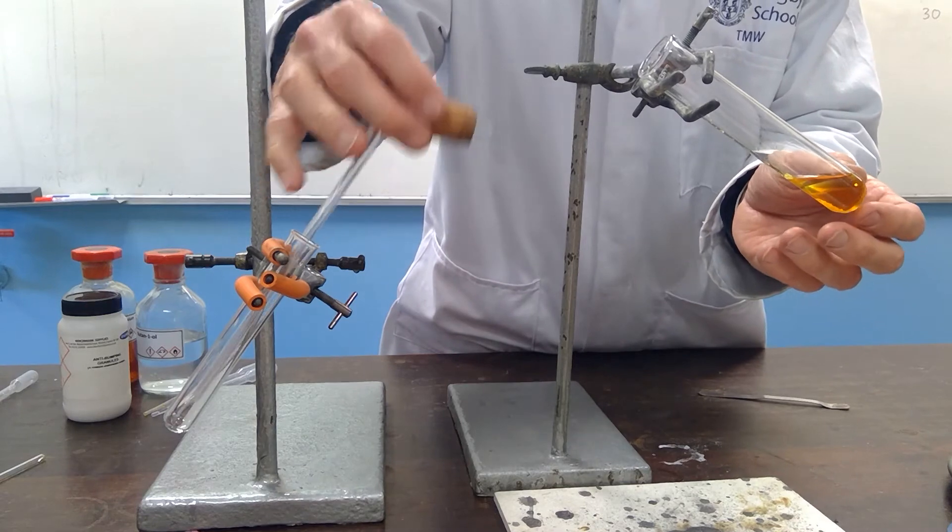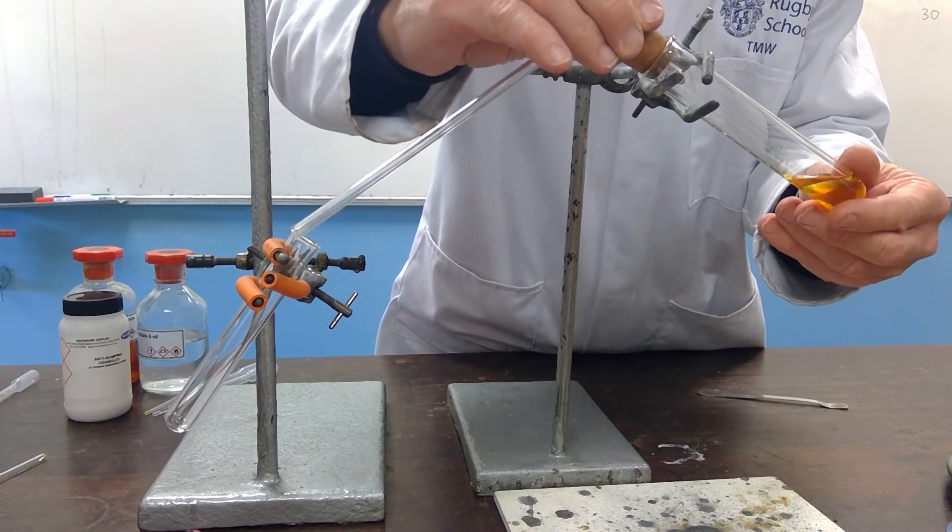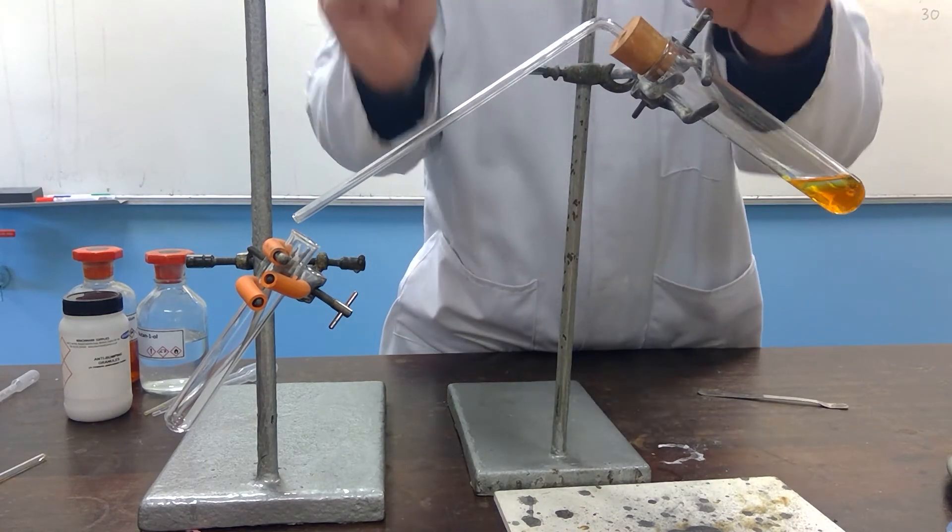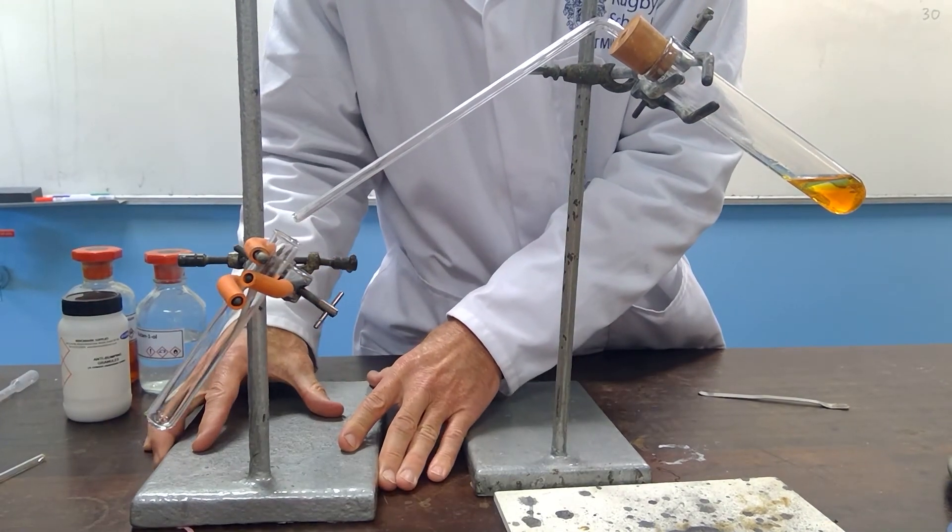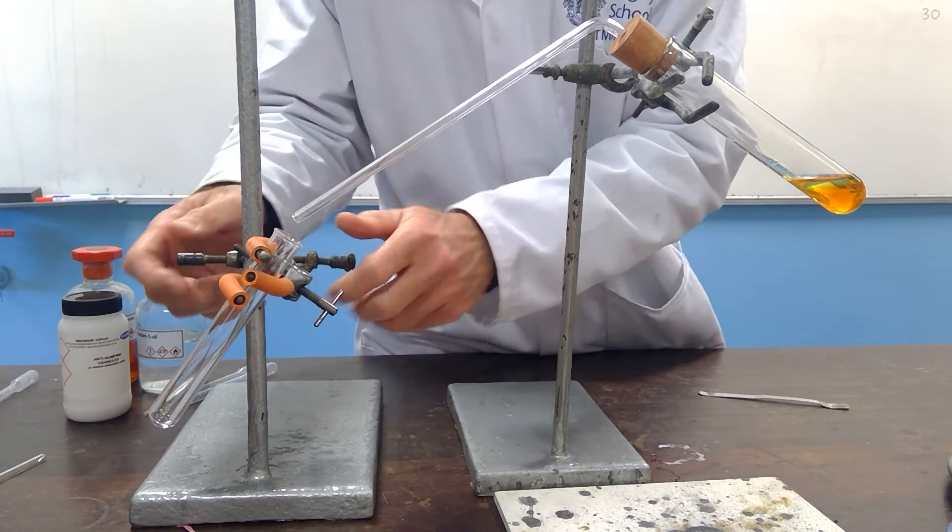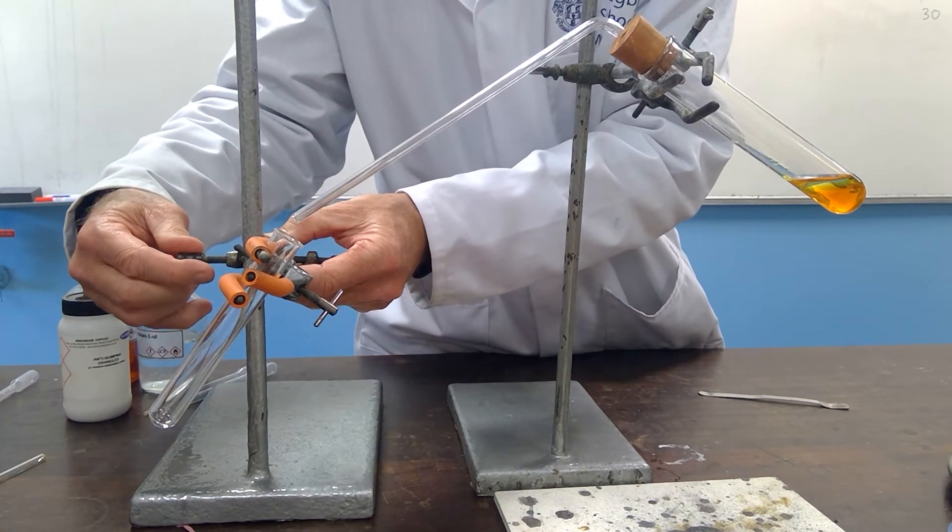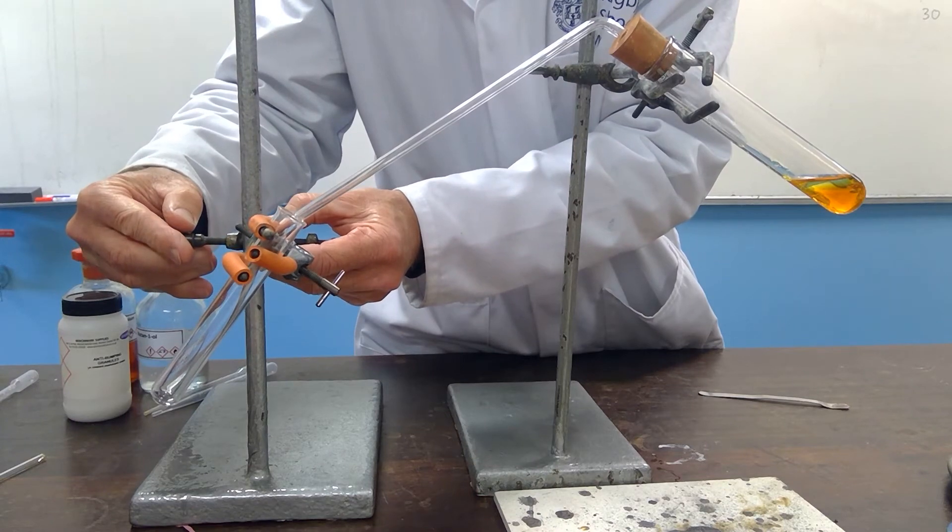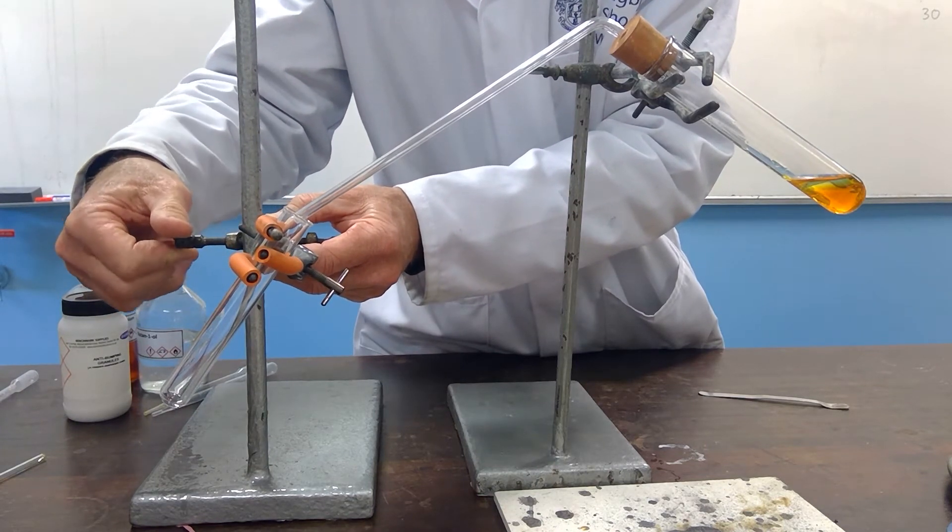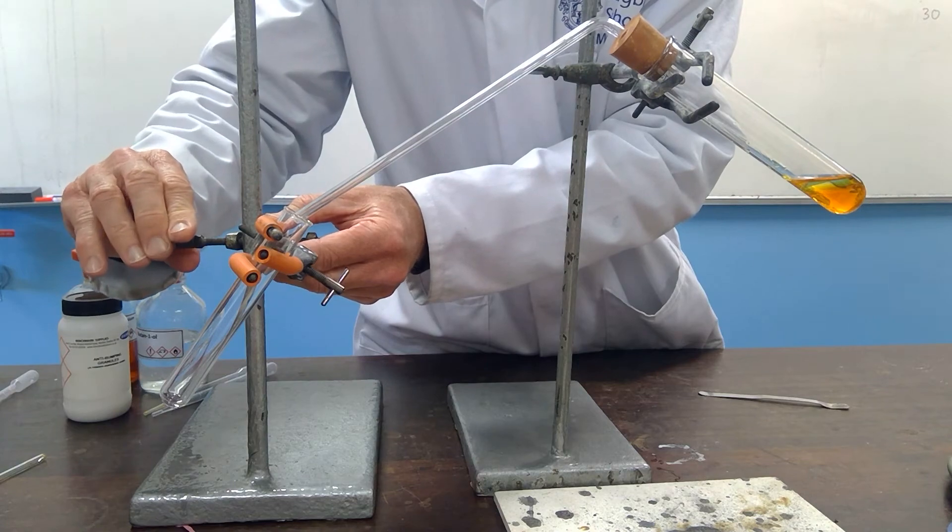Okay, so all that we need to do is to heat the combination and bring over the products. Now, in the case of butan-1-ol, the product is going to be butanal. This distills over because it has a lower boiling point than the butan-1-ol and also a lower boiling point than the potential product of butanoic acid.